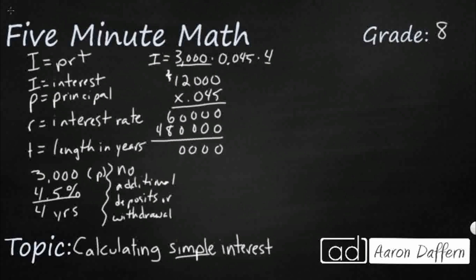And so we're going to get 540. We have three digits behind the decimal point, so our interest is $540.